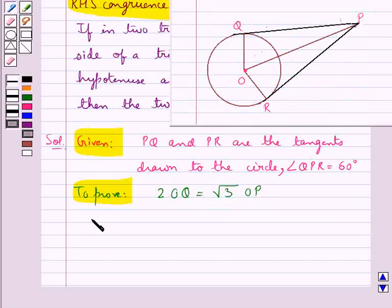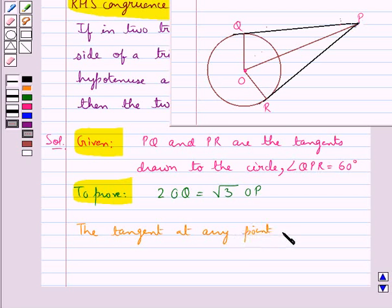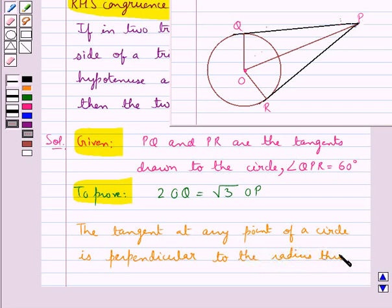Now since we know that the tangent at any point of a circle is perpendicular to the radius through the point of contact,